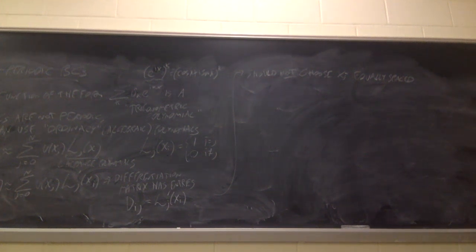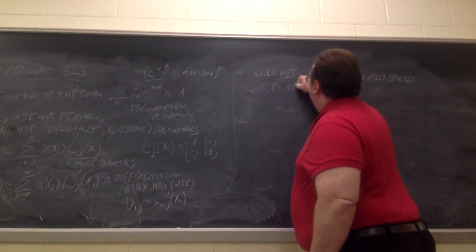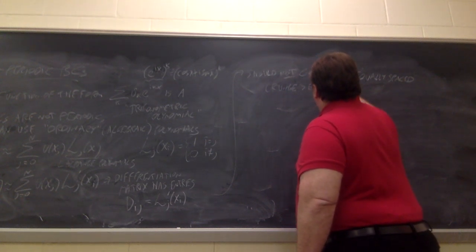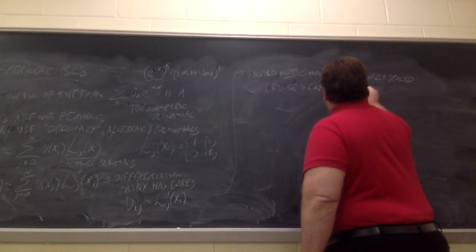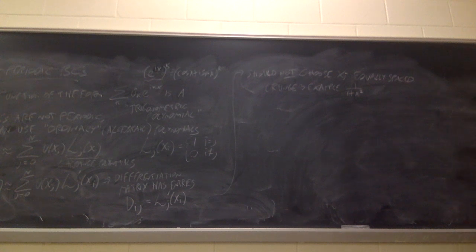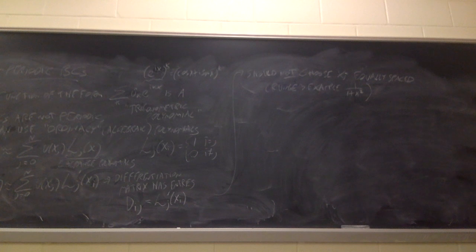Unlike the periodic case — where equally spaced points for trigonometric polynomials are fine — for algebraic polynomial interpolation we should not use equally spaced points. There is a famous example from MATH 560: fitting 1/(1 + x²) with a high-degree polynomial at equally spaced points produces a terrible approximation. High degree with equally spaced points is bad.